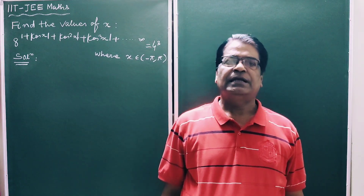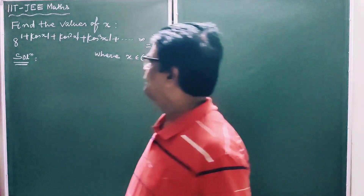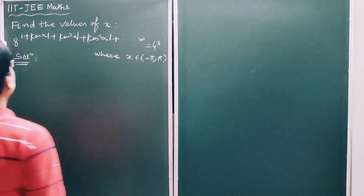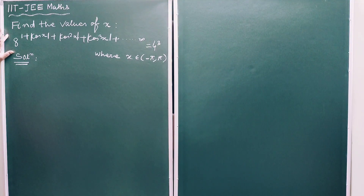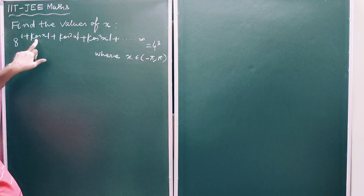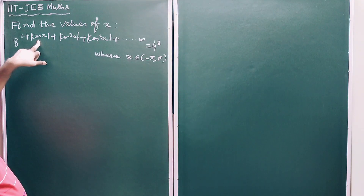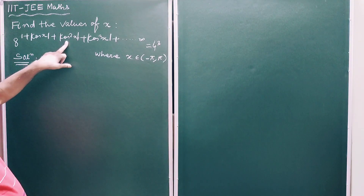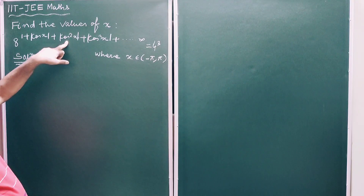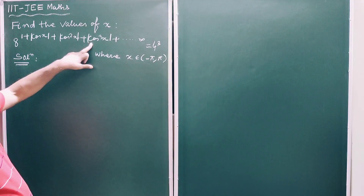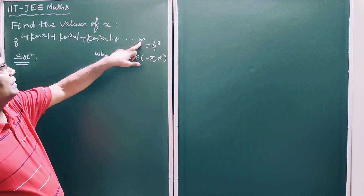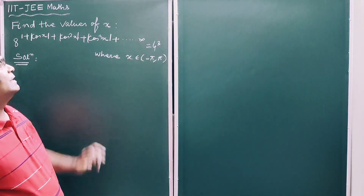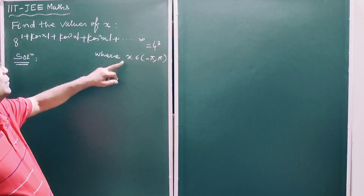Hello students, let us solve an important exponential equation and we have to find the value of x. Here it is given: 8 to the power of 1 plus |cos x| plus |cos²x| plus |cos³x| plus dot dot dot, continuing as an infinite series.